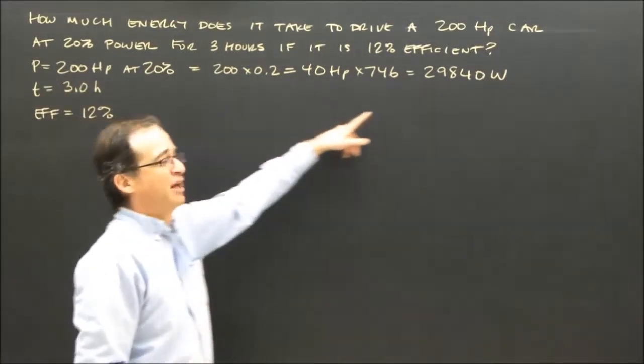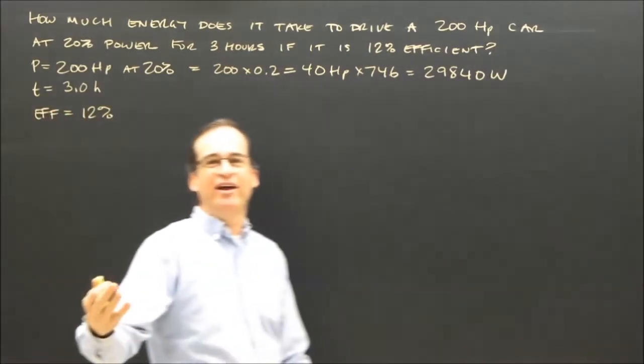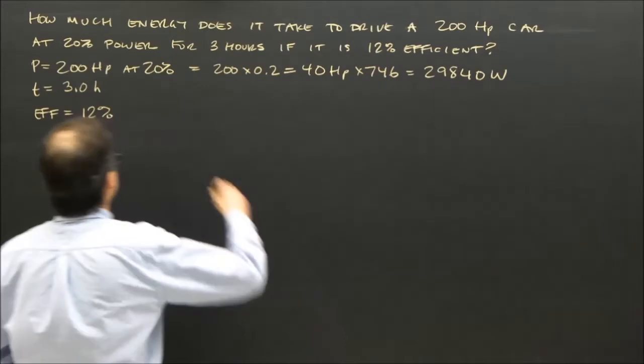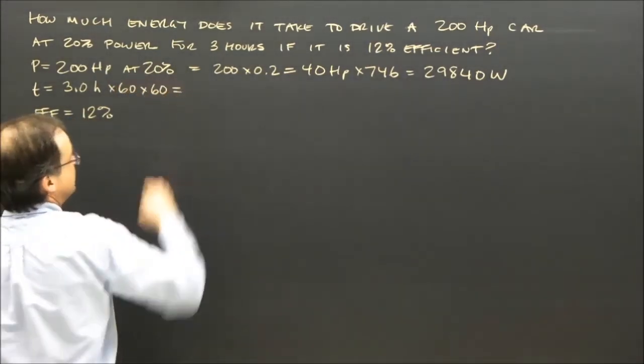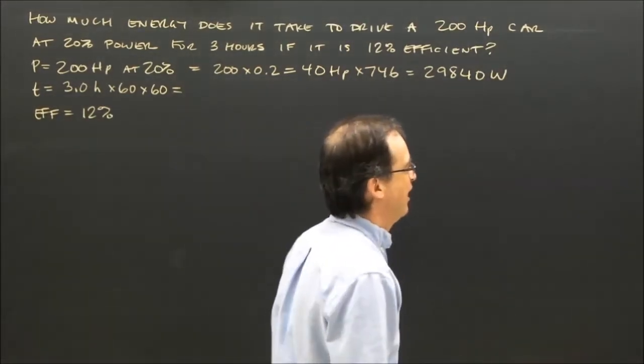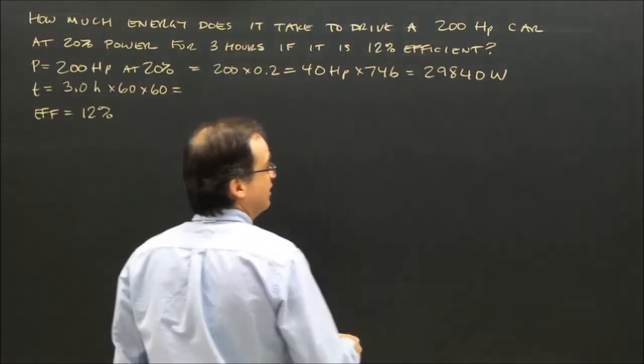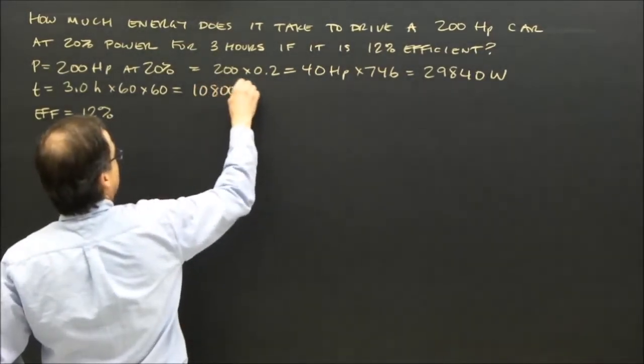So I know what power I'm getting out of this engine right now. The time is 3 hours. Well, we can't have hours as a time. So we have to convert that to seconds by multiplying by 60 and by 60 to turn hours into minutes, minutes into seconds. And our answer to that is 10,800 seconds.